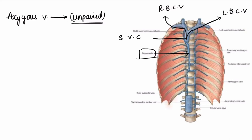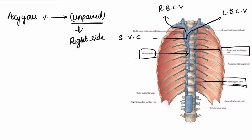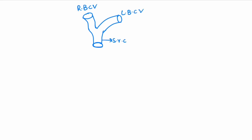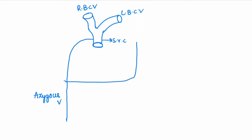To the left we have the accessory hemiazygous vein and the hemiazygous vein. So we have two veins on the left side: the accessory hemiazygous vein and the hemiazygous vein. Let us draw our own diagram and discuss this system in detail. As we already discussed, the right brachiocephalic vein and the left brachiocephalic vein combine together to form the superior vena cava. Into the superior vena cava, the azygous vein is drained.